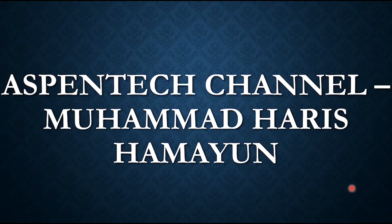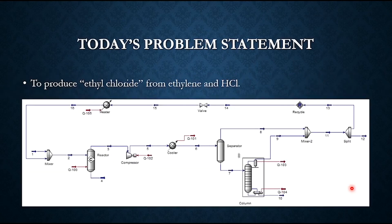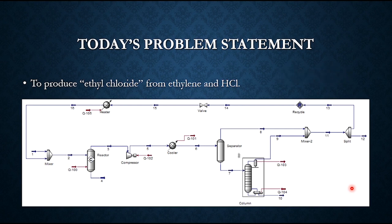Hello everyone, welcome back to the Aspen Tech channel. In today's problem statement, we will be producing a flow sheet to produce ethyl chloride from ethylene and hydrogen chloride. This is the overall process flow sheet, starting from stream number one, which is the feed stream containing mainly ethylene and HCl with small traces of nitrogen, then sent to a conversion reactor.